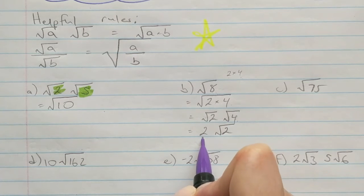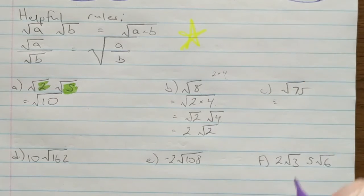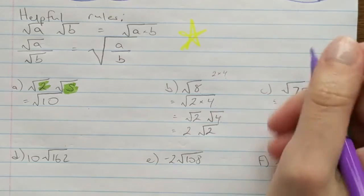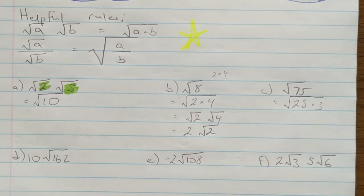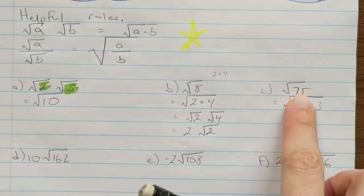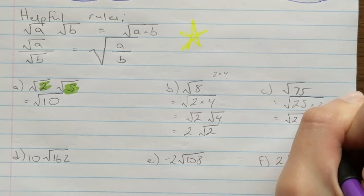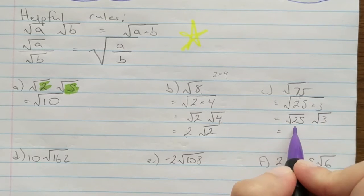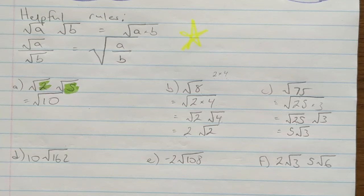Let's look at another example: √75. I know that 75 = 25 × 3, so √75 = √(25 × 3) = √25 × √3. The square root of 25 is 5, so the answer is 5√3.